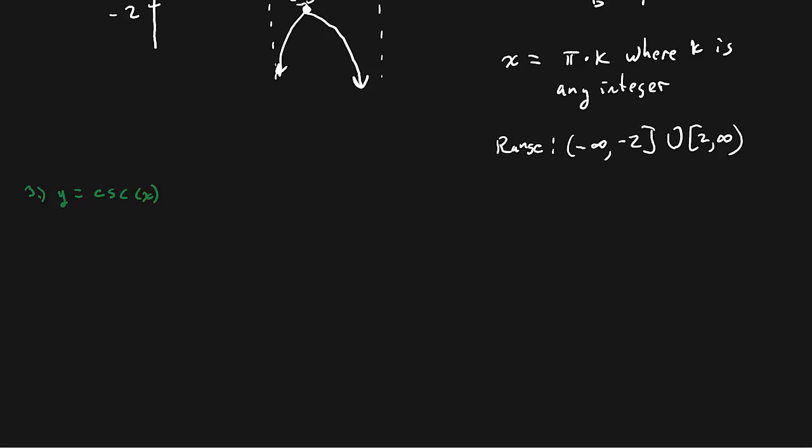Now let's graph cosecant. If you understand how to graph secant, cosecant is the same process. The only difference is instead of graphing cosine first, you graph the sine function first. If you're still having trouble, the issue is likely that you don't know how to graph sine and cosine — go back and watch those videos.